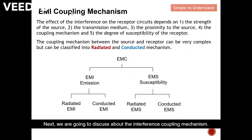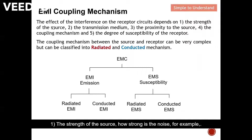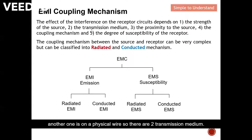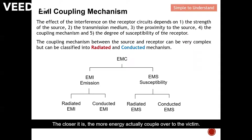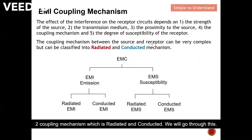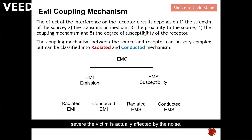Next we discuss the interference coupling mechanism. The effect of interference on the receptor circuit depends on five main factors: one, the strength of the source — how strong is the noise; two, the transmission medium — over the air or on a physical wire; three, proximity to the source — the closer the victim is, the more energy couples over; four, the coupling mechanism — radiated or conducted; and five, the degree of susceptibility of the receptor — how severely the victim is affected by the noise.